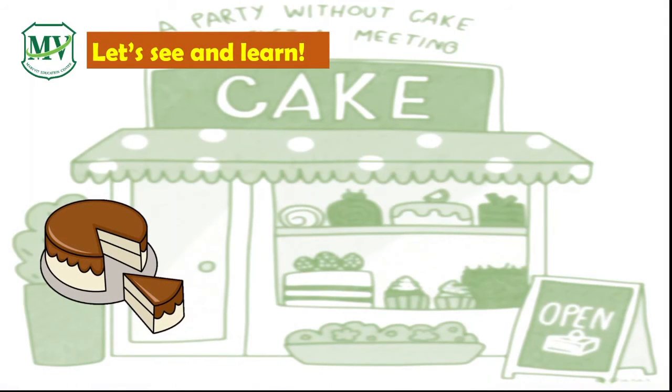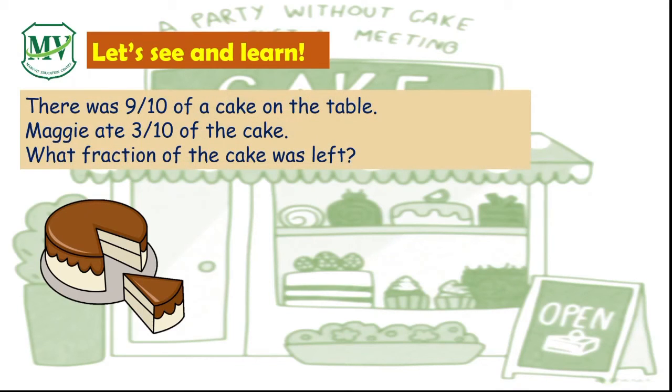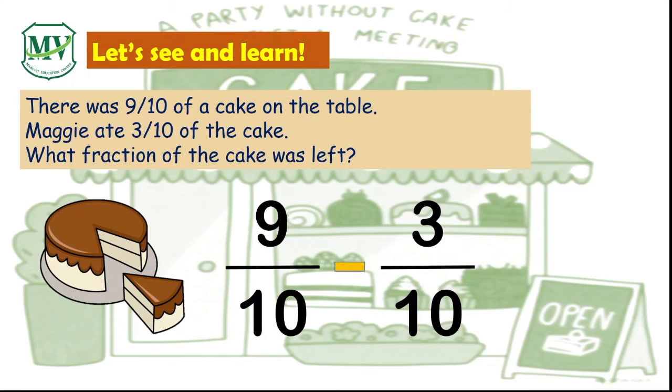Will you help me with another one? Great! There was 9 tenths of a cake on the table. Maggie ate 3 tenths of the cake. What fraction of the cake was left? To find out, we need to subtract the fractions: 9 tenths minus 3 tenths.